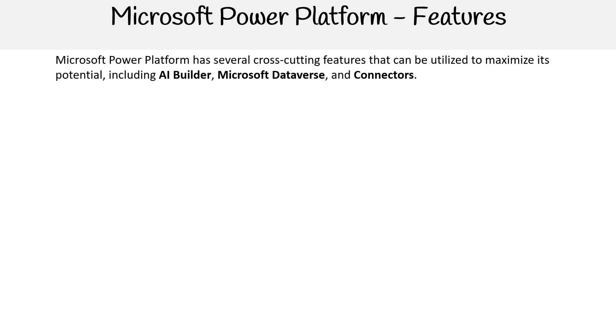The next topic we'll be covering are the key Power Platform features. Microsoft Power Platform has several cross-cutting features that can be utilized to maximize its potential, including AI Builder, Microsoft Dataverse, and Connectors.